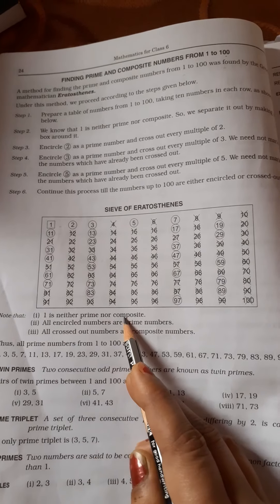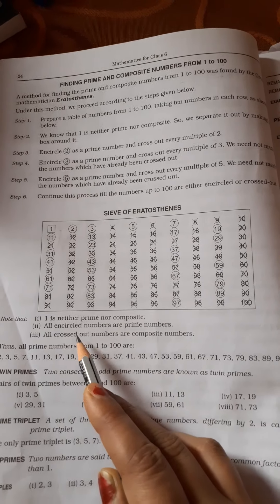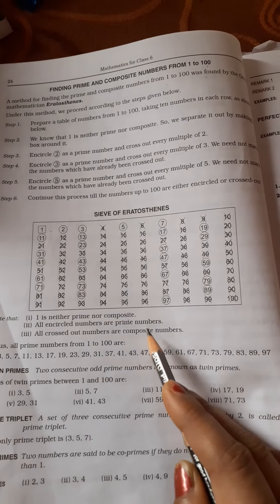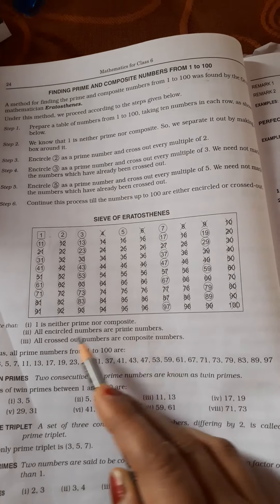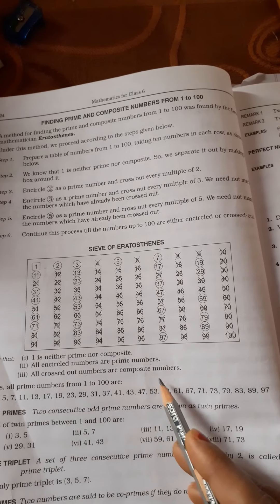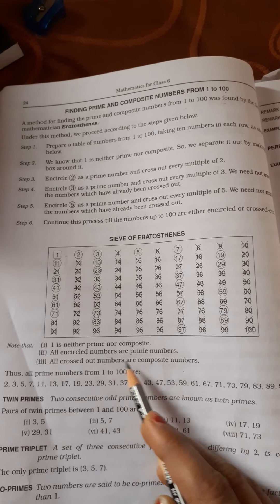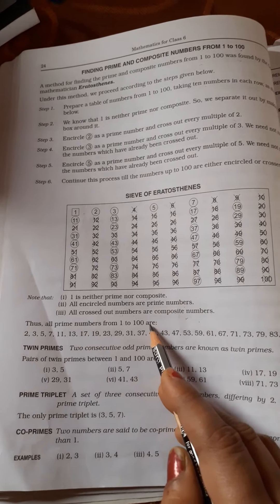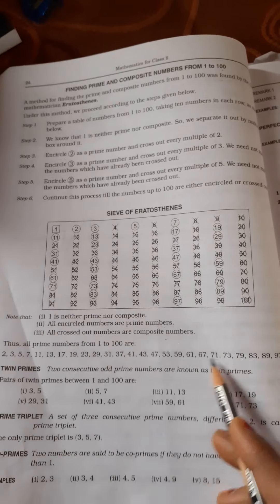Read this table yourself. One is neither prime nor composite. All encircled numbers are prime numbers. All crossed out numbers are composite numbers. Thus all prime numbers from 1 to 100 are identified.